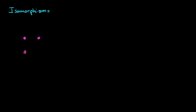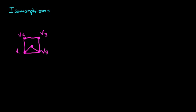So here we have one picture. There are five vertices, and the edges go all the way around, and then there's also some edge inside. We have some labeling here. The labeling of the vertices is v1, v2, v3, v4, v5. So that's one graph.